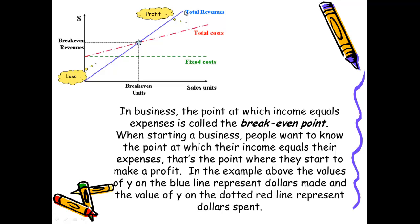Looking at this blue line, that gives us our total revenue — how much income is made given any number of sales units produced. This dashed red line represents costs, telling us the cost in dollars of producing a given number of sales units. Where the blue line representing revenue intersects the red line representing costs, we can identify the break-even point. At that point, we find how many units we must make or sell for revenue and cost to be equal. If we produce less than that break-even point, we will be losing money — that's a loss. However, if we produce or sell more than the break-even amount, we are generating a profit.